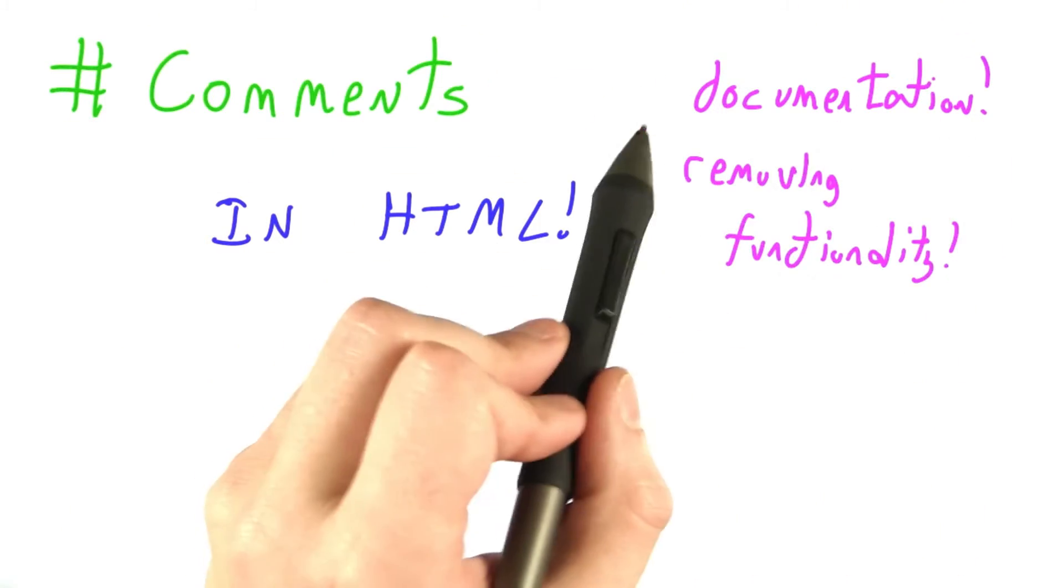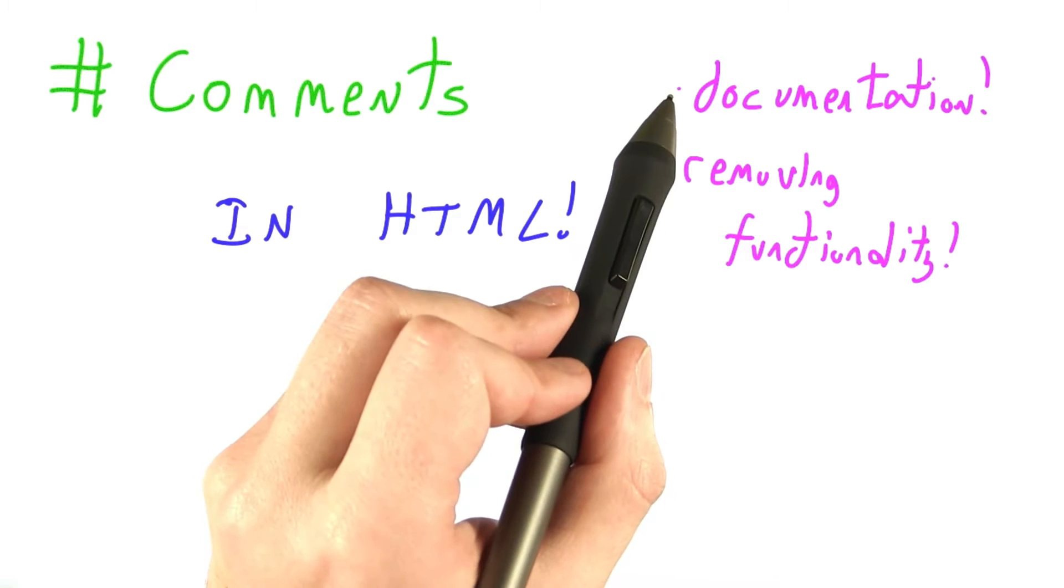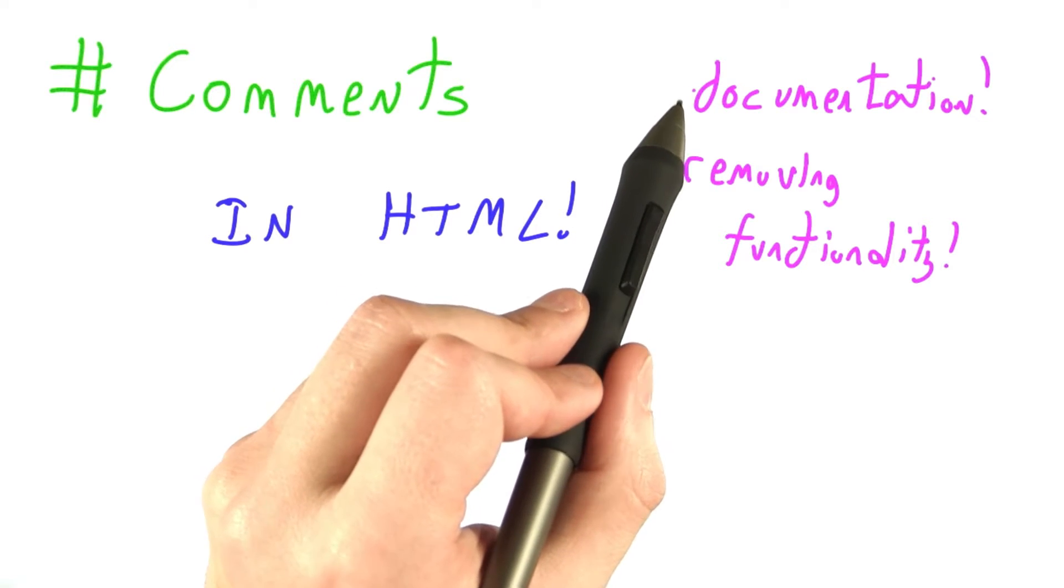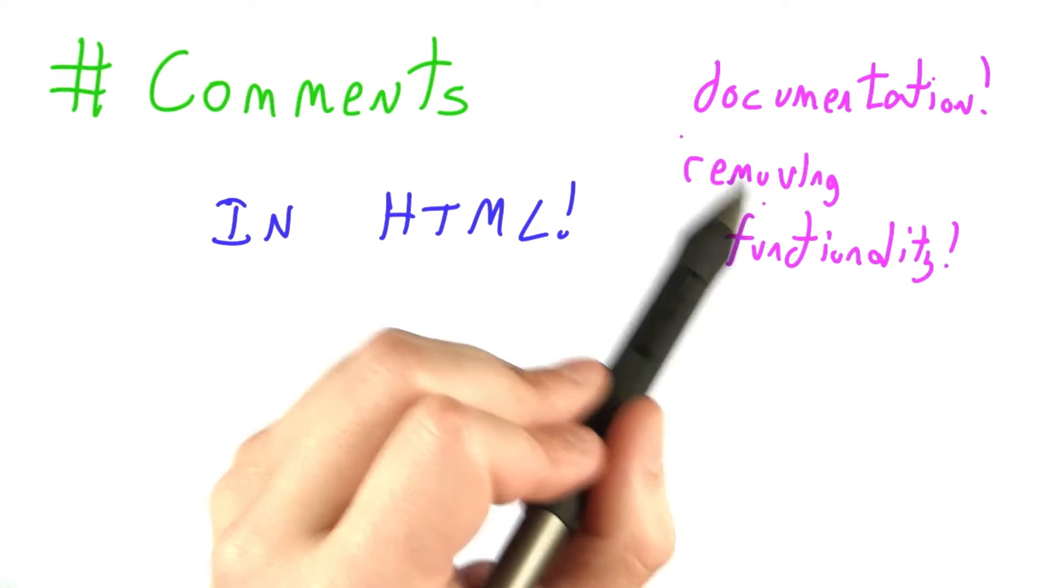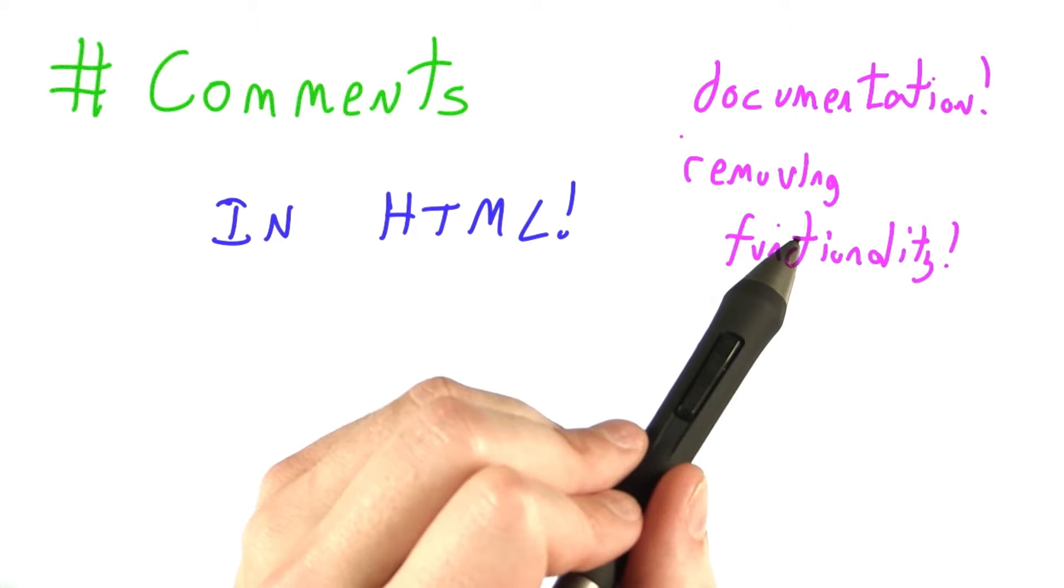You can add a comment containing English text to explain what a program should be doing. You could do the same with a web page or with a JavaScript program. Or you could comment out a function or a line to see how things behave without it.